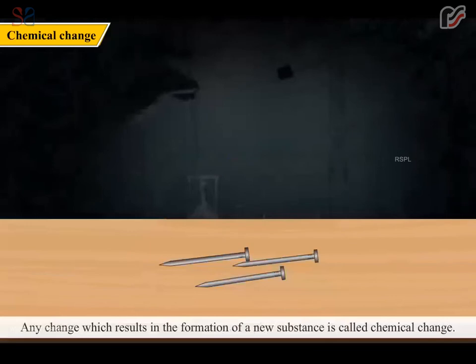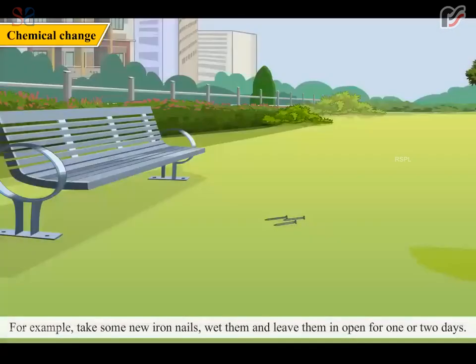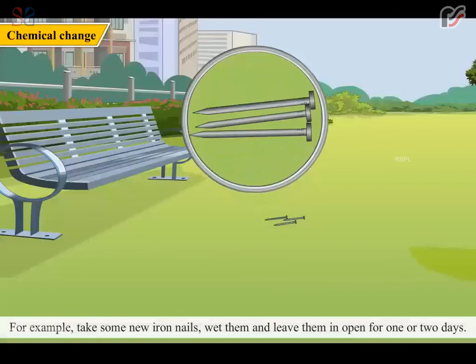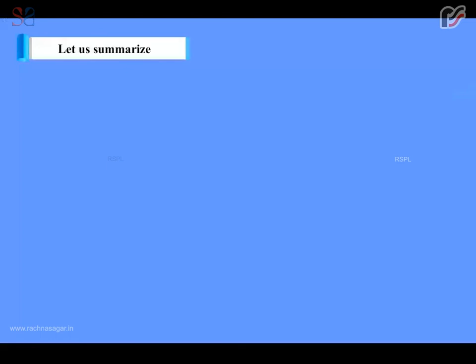Any change which results in the formation of a new substance is called chemical change. For example, take some new iron nails, fit them and leave them in open for one or two days. After two days, you will find them rusted. We cannot get the nails as they were before. This is an example of chemical change.